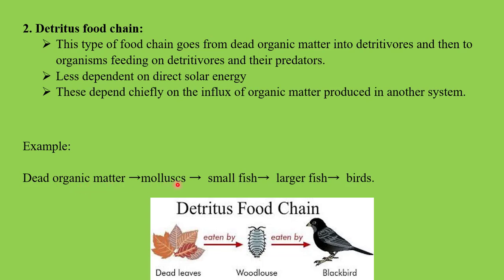For example, dead organic matter falls somewhere — in a forest or cropland. What happens next is that mollusks — for example, snails — they are the detrivores and they consume this dead organic matter. And this is consumed later by the small fish, then the larger fish, and then the birds.